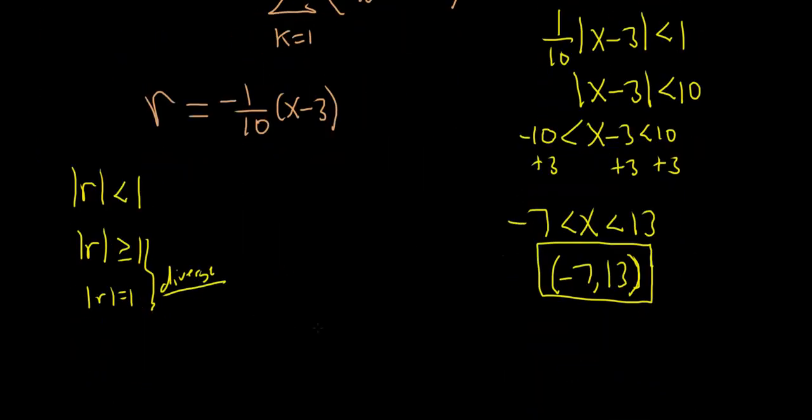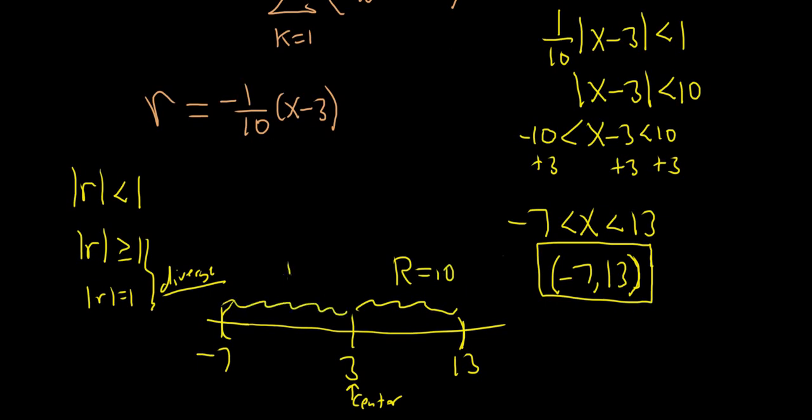So let me draw a picture. So here's 3. Here's 13. And then here is negative 7. So this is the center. And these are the endpoints. So the radius is just this distance here, which would be 10. You can also go this way and it's also 10. The radius is 10. So r is equal to 10. And that would be the final answer.